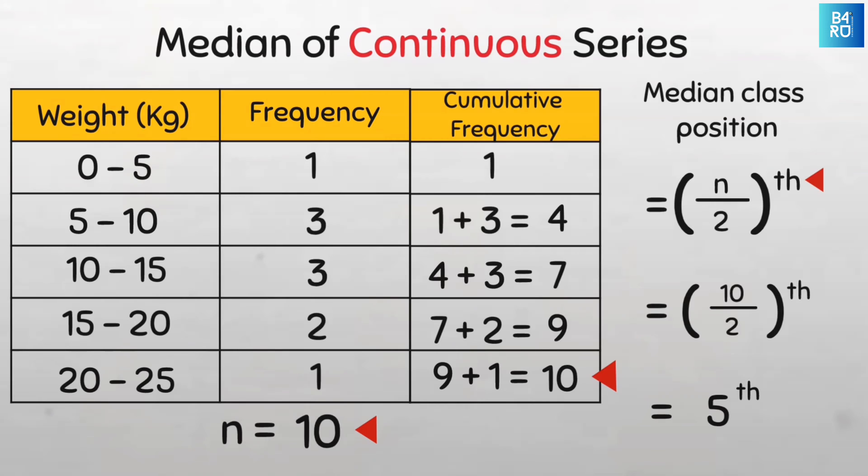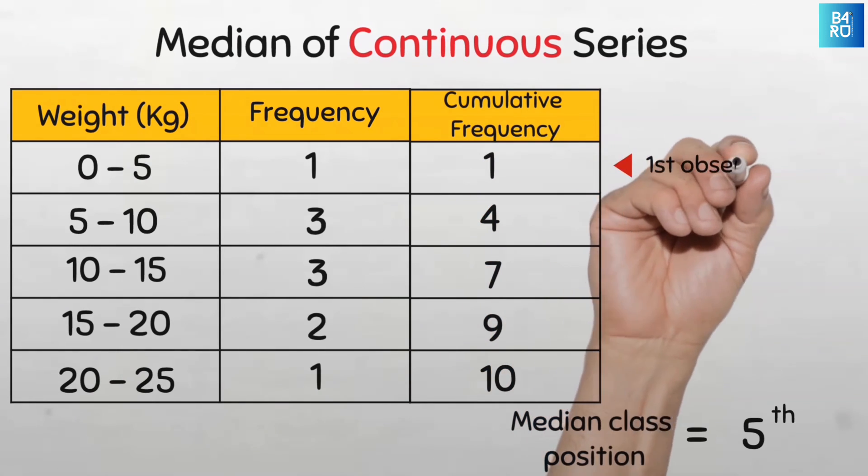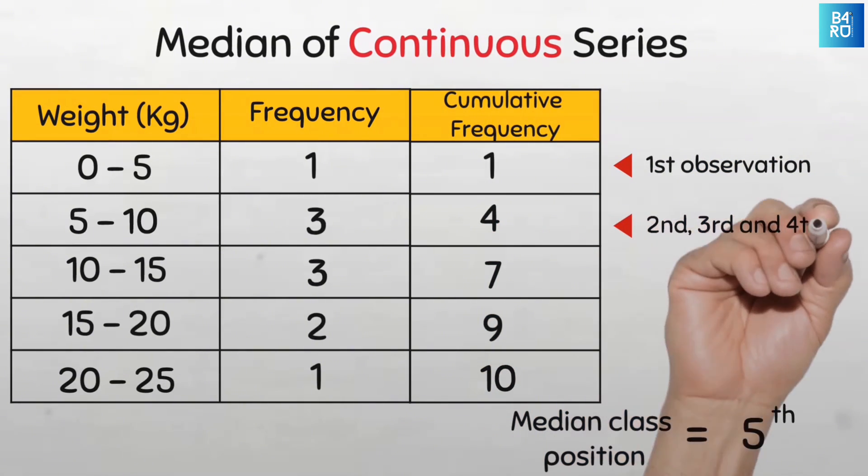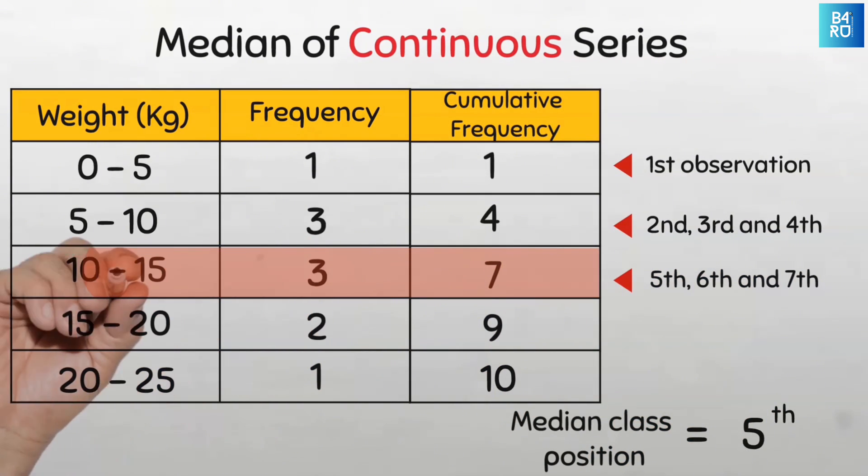Next, we locate the median class using the cumulative frequency. The first observation lies in this class, as we can see a frequency of only 1. Then the next three observations lie in the second class. That's already four observations, right? But we are looking for the fifth observation. And the fifth, sixth and seventh observations all lie in the class of 10 to 15 kg. So this is our median class.